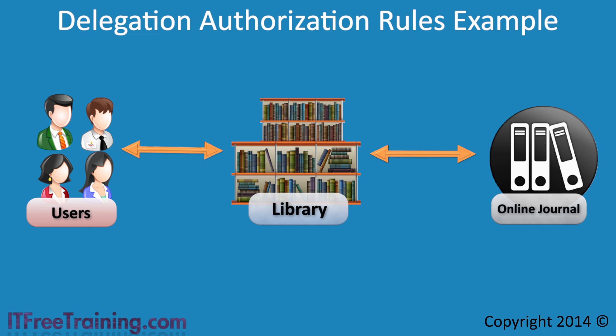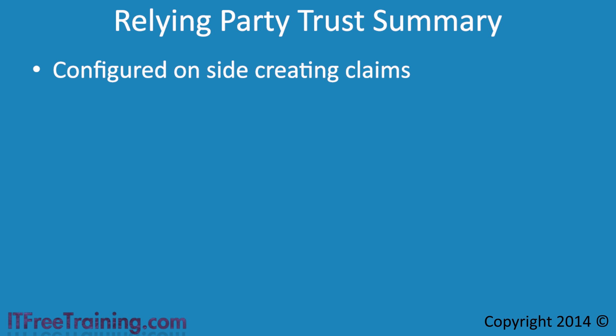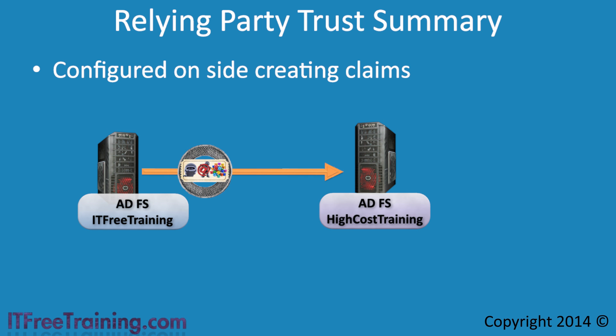There has been a lot covered in this video, so I will perform a quick summary of the major points. In order to have a trust relationship in Active Directory Federation Services, you require a Relying Party Trust and a Claims Provider Trust. In this video, I have looked at the Relying Party Trust. The easiest way to remember where this goes is to think of it as configured on the side that creates the claim. The ITFreeTraining Active Directory Federation Server creates claims that are used by the HighCostTraining Federation Server. For this reason, the Relying Party Trust is configured on the ITFreeTraining side. Although this may seem opposite to what you expect, remember that the server is creating the claim and sending it to the other party — since it is creating the claim, it needs to know what it is creating.